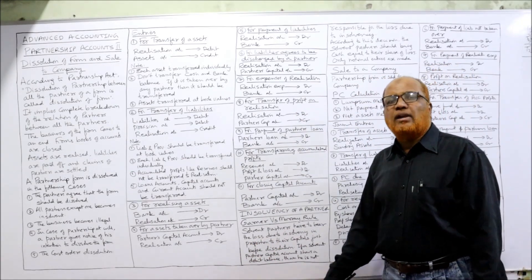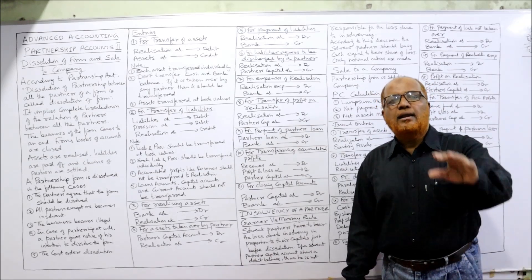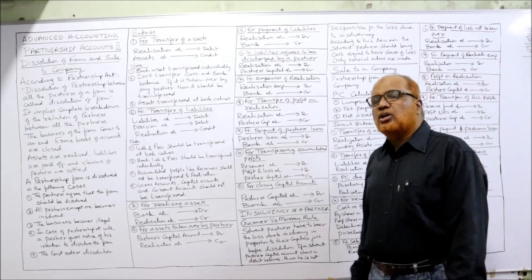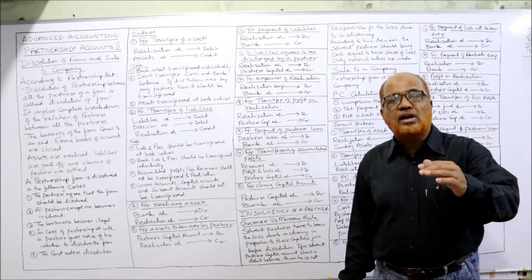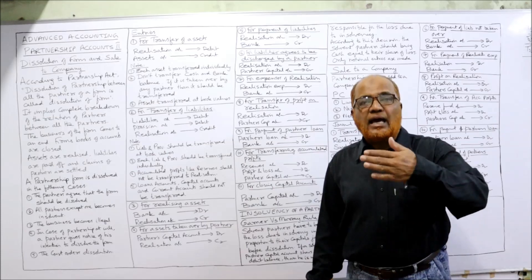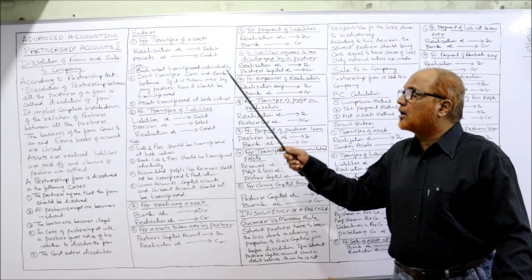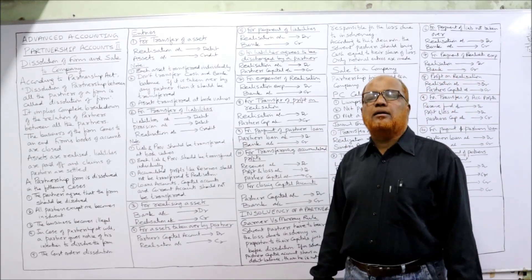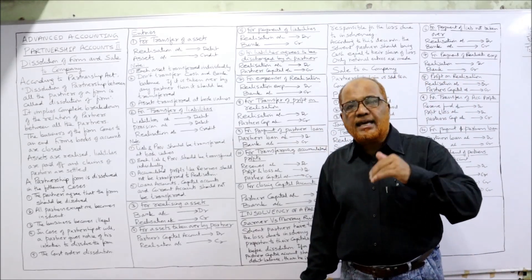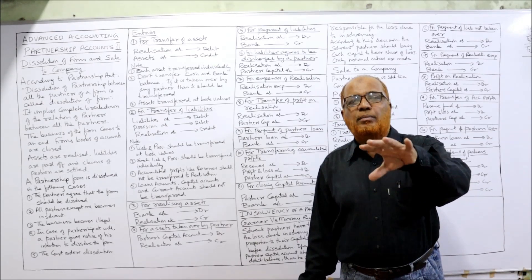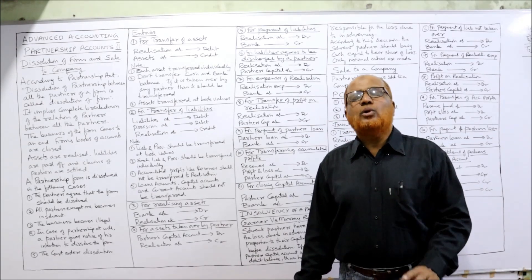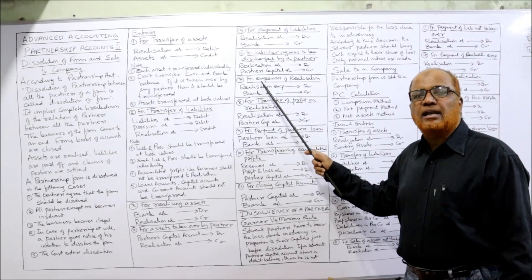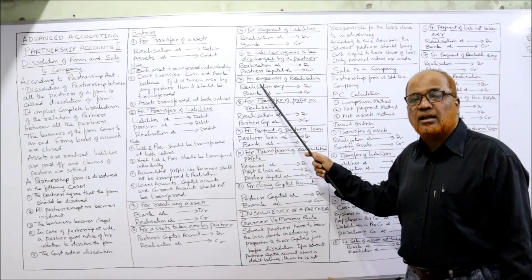For payment of liabilities: when liabilities are paid, entry is Realization Account debit, Bank Account credit, because we are paying out cash. For a liability agreed to be discharged by one of the partners — if a partner has taken responsibility to pay off a liability — entry will be Realization Account debit, Partner's Capital Account credit, because the partner has taken up the responsibility.